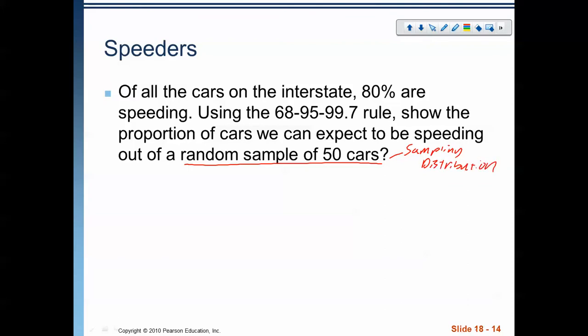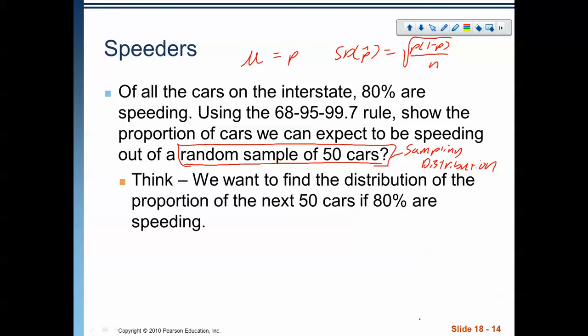And that is your key to start to build this model using the mean equal to p and the standard deviation of that p hat, where being that p times 1 minus p all over n. When we read something like this that says a random sample of 50 cars in this kind of context, we know we're supposed to use a sampling distribution to represent it. So, think, show, tell. We want to find the distribution of the proportion of the next 50 cars if 80% of them are speeding. That's what we're looking to find here.